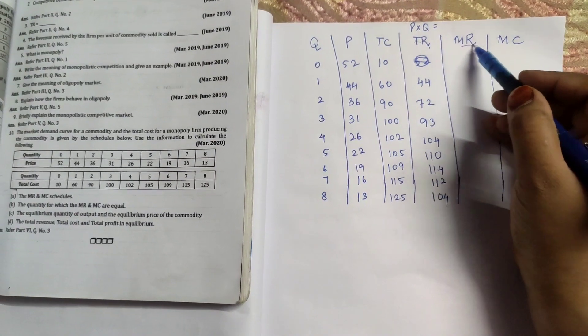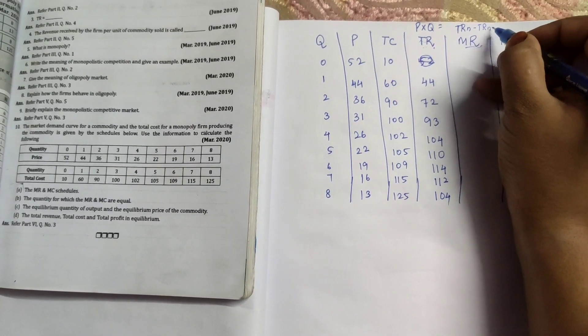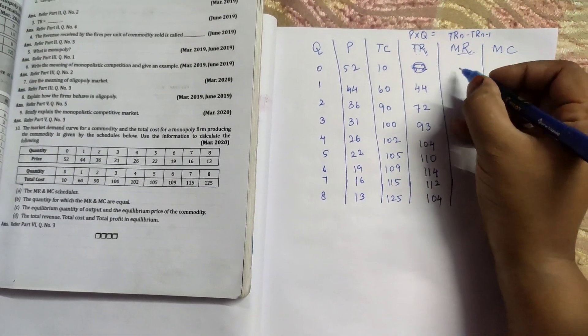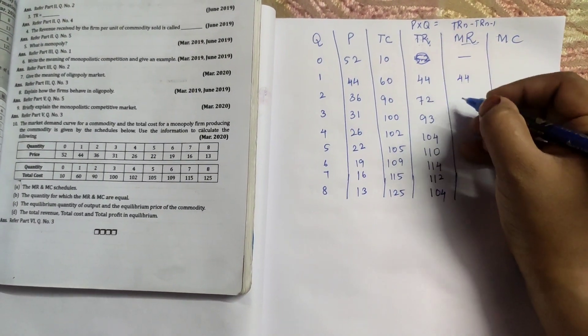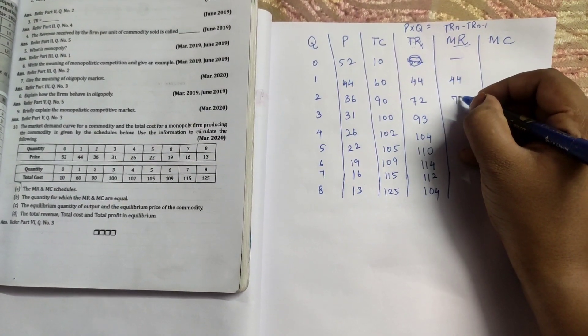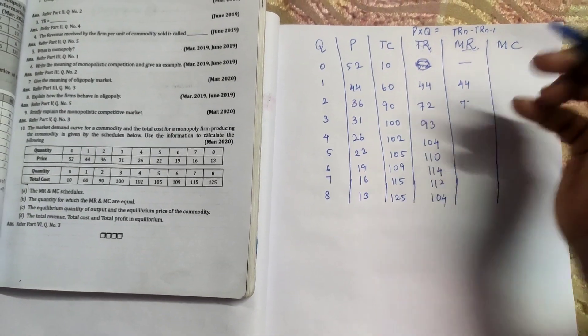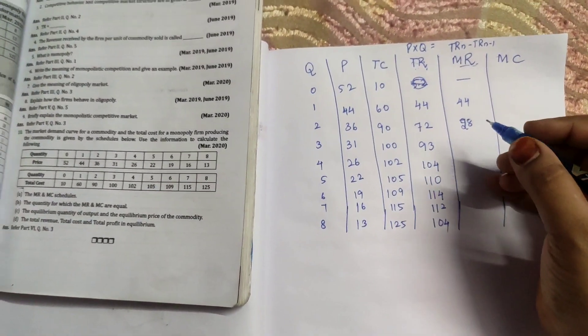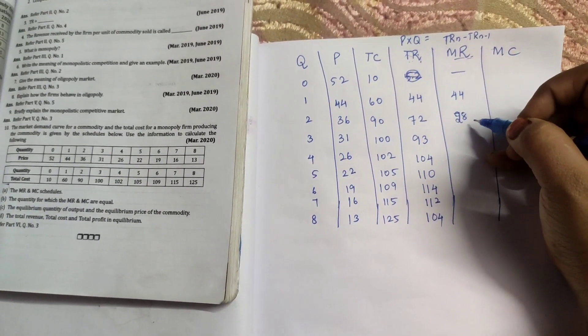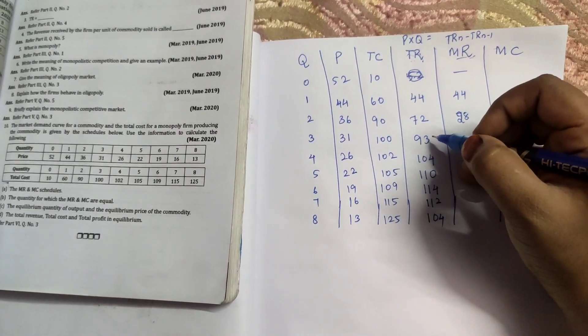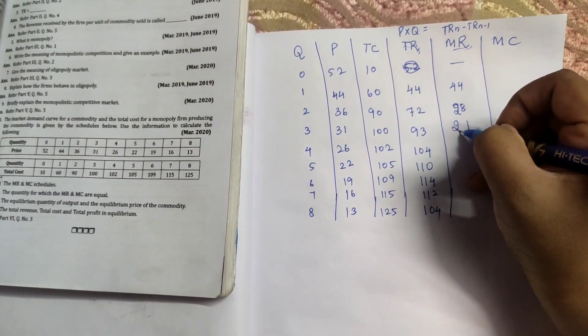Now, to calculate MR, we need to take TR N minus TR N minus 1. So we do not have any upper value, so as it is 44 minus 0 is 44. 72 minus 44 is 28. MR is total revenue N minus total revenue N minus 1. So 72 minus 44 is 28. 93 minus 72 is 21.